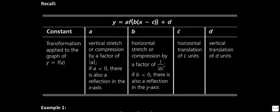C moves us left or right — you're sometimes used to seeing that letter as H. We think of the opposite here. And then D moves us up or down; that's our vertical translation. We don't have to worry about doing anything the opposite for D.